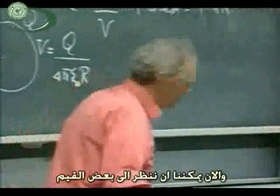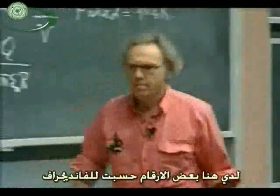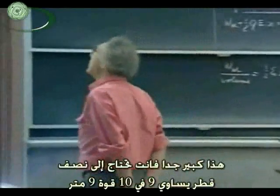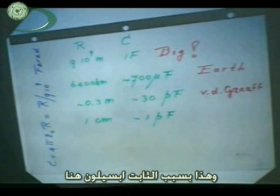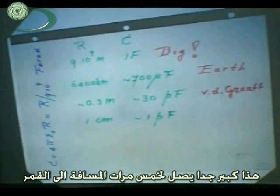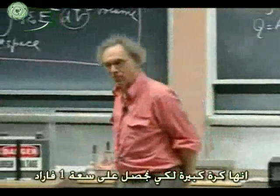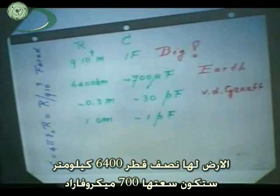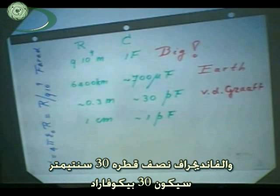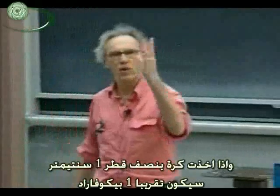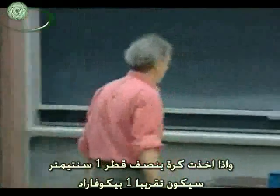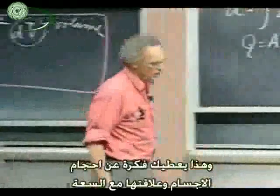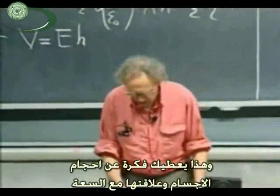We can now look at the values as a function of R. I have here some numbers. I calculated it for the Vandegraaff and for the Earth. If you want one farad capacitance — that's a real biggie — you need a radius of nine times ten to the nine meters. That's huge: 25 times the distance from the Earth to the Moon. The Earth itself, with a radius of 6400 kilometers, would have 700 microfarads. The Vandegraaff, 30 centimeters radius, would be 30 picofarads — pico is ten to the minus twelve. And a sphere with a radius of one centimeter has roughly one picofarad, ten to the minus twelve farads. This gives you a rough idea about the size of objects and how they connect to their capacitance.